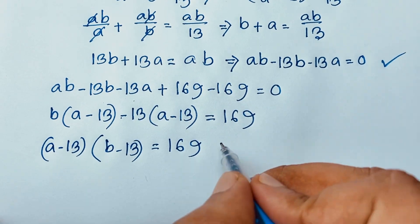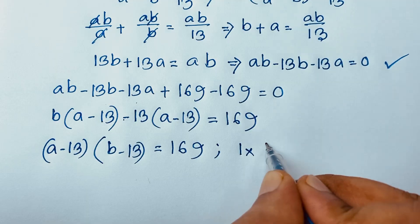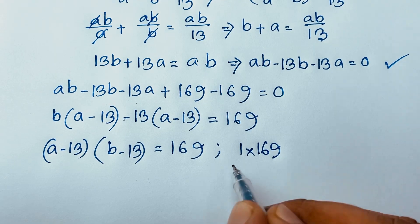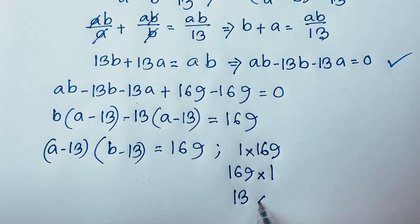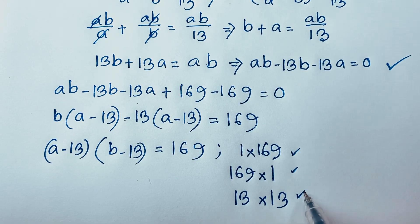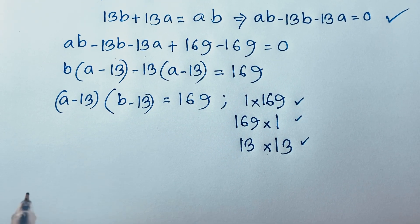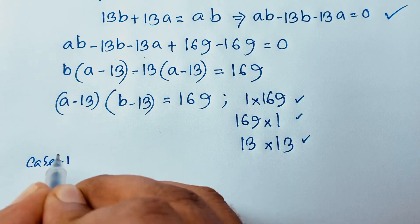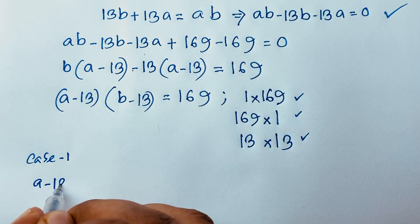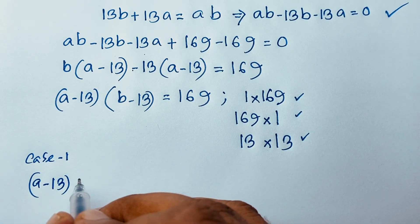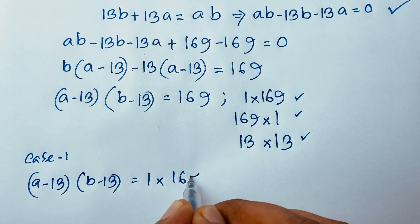Now we will find out the factors of 169. 169 equals 169 times 1, and also 13 times 13. Every factor is possible. So our first case, Case 1: (A minus 13) times (B minus 13) is equal to 1 times 169.